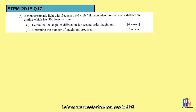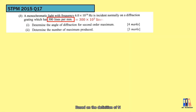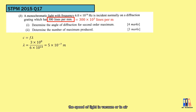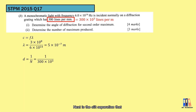Let's try one question from the past year in 2015. A monochromatic light with frequency 6 × 10¹⁴ Hz is incident normally on a diffraction grating which has 300 lines per millimeter. Based on the definition of n, we need to convert the unit to lines per meter, so 300 lines/mm equals 300,000 lines/m. Given the frequency of light and the speed of light as 3 × 10⁸ m/s, using v = fλ, we get the wavelength as 500 nm. The slit separation d = 1/n = 1/300,000 m.